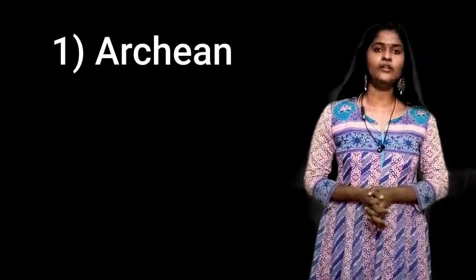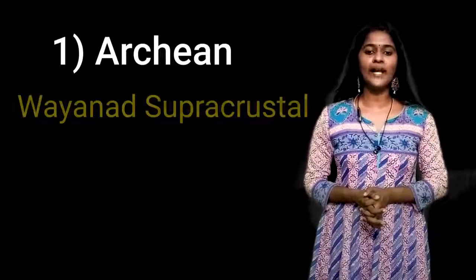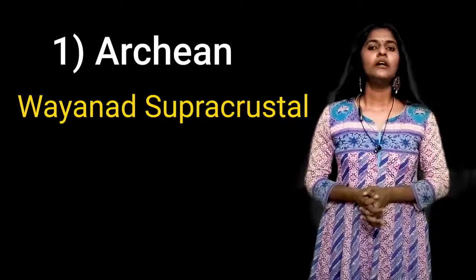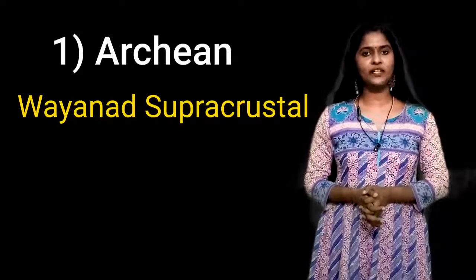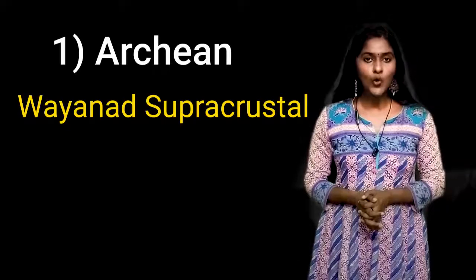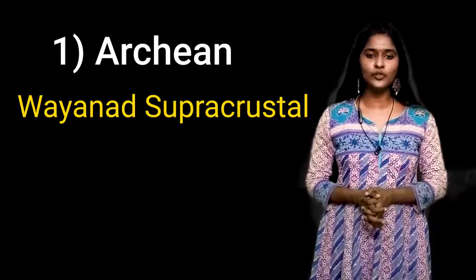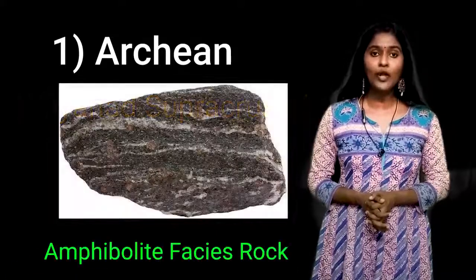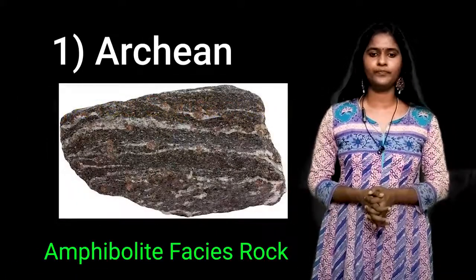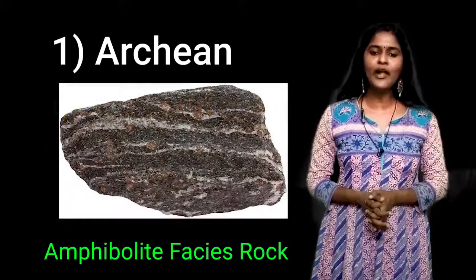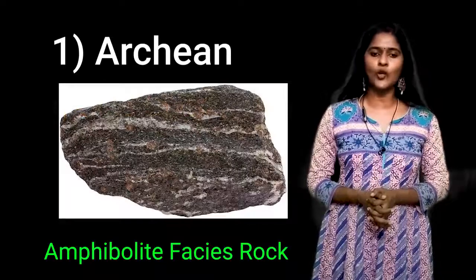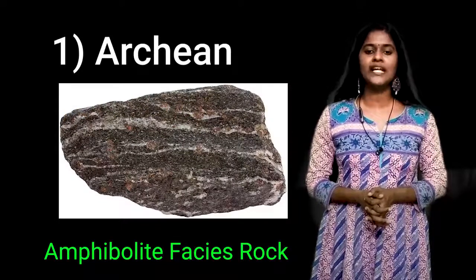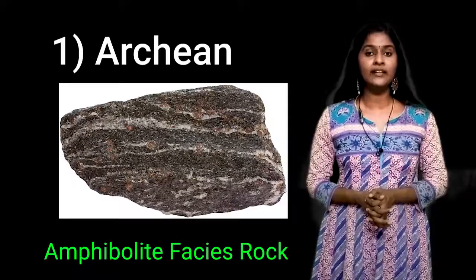First, the Archean Eon. It has the Wyanad Supracrustal Formations, also known as the Wyanad Group. It mainly consists of amphibolite facies rocks. The amphibolite facies rocks occur as rafts and enclaves, inliers and granulites.